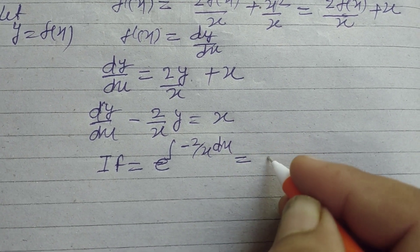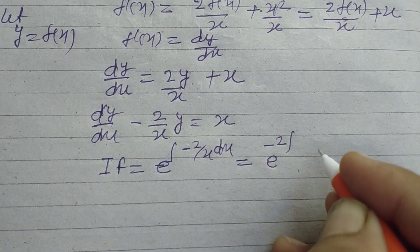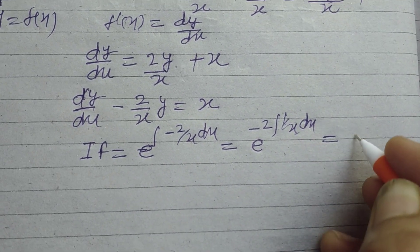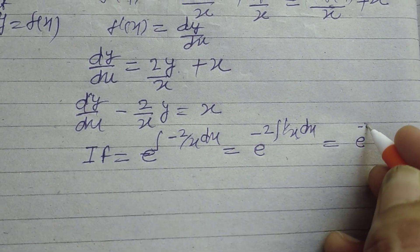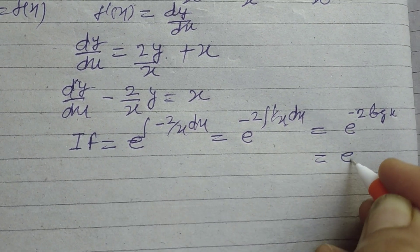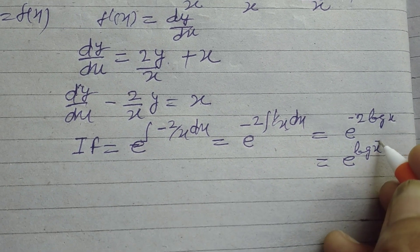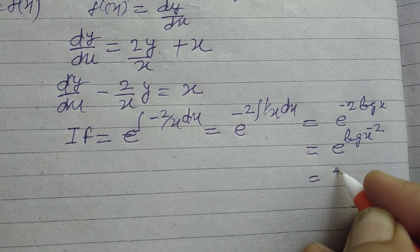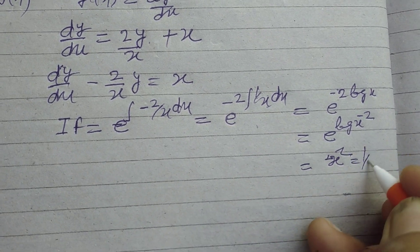This becomes e^(-2∫(1/x)dx) = e^(-2log x) = e^(log x^(-2)) = x^(-2) or 1/x².